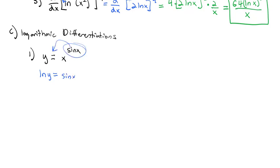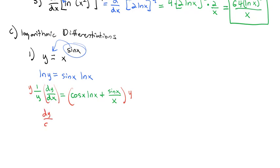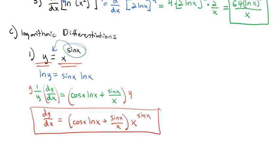When we take the natural log, the exponent moves out front and we have sine(x)·ln(x). Then we take the derivative: on the left we get (1/y)·(dy/dx). On the right, using the product rule, we get cosine(x)·ln(x) plus (1/x)·sine(x). To isolate dy/dx, we multiply both sides by y, giving dy/dx equals (cosine(x)·ln(x) + sine(x)/x) times y, where y is the original expression x to the sine of x.